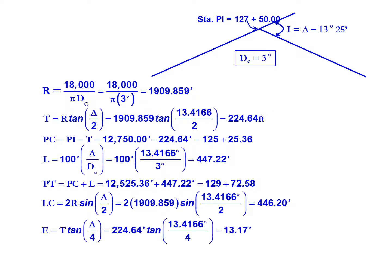Our external distance: 224.64 feet, that's our tangent length, multiplied by the tangent of delta divided by 4, that's 13.4166 degrees divided by 4, gives us an external distance of 13.17 feet.